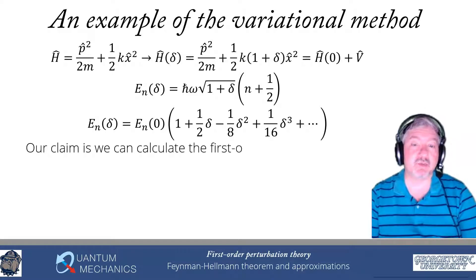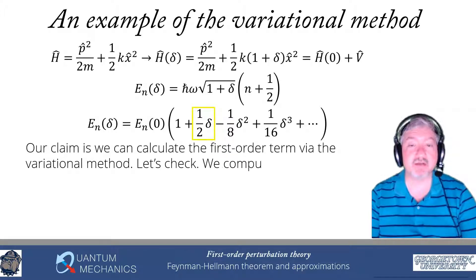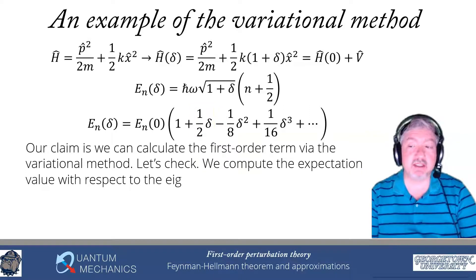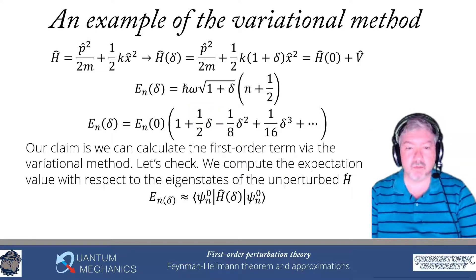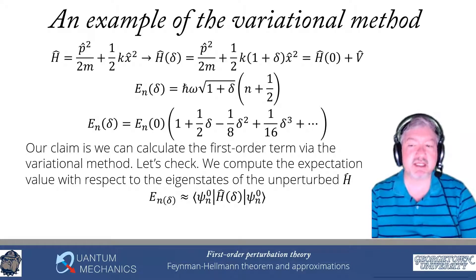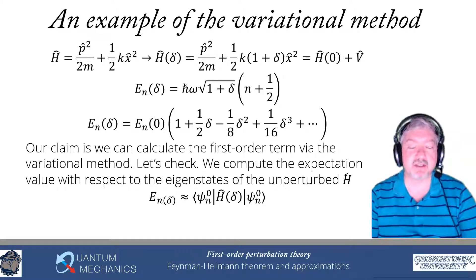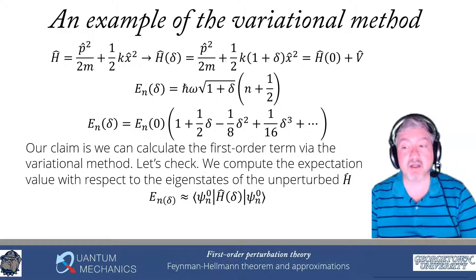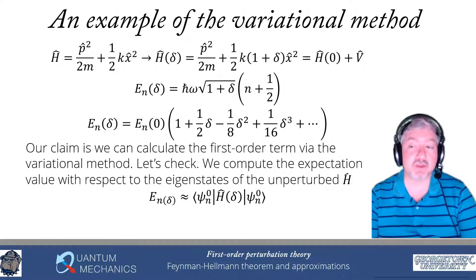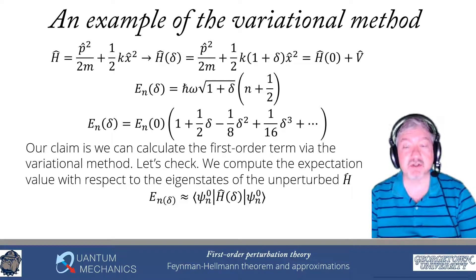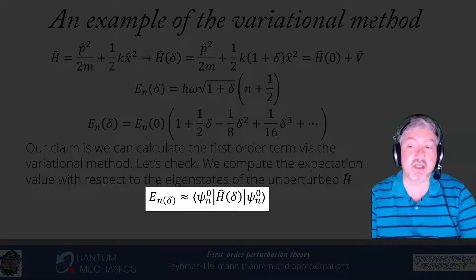Our claim is that we can calculate the first-order term in that expansion — the one-half delta term — using the variational method. The idea is that we take the expectation value with respect to the eigenstates of the unperturbed Hamiltonian. We take the expectation value of E_n(delta) with the unperturbed eigenfunctions. The unperturbed wave functions are not the eigenfunctions of the full Hamiltonian, because the subsidiary condition depends on omega, and we're changing omega. So we look at the expectation value of H(delta) in the unperturbed wave functions.